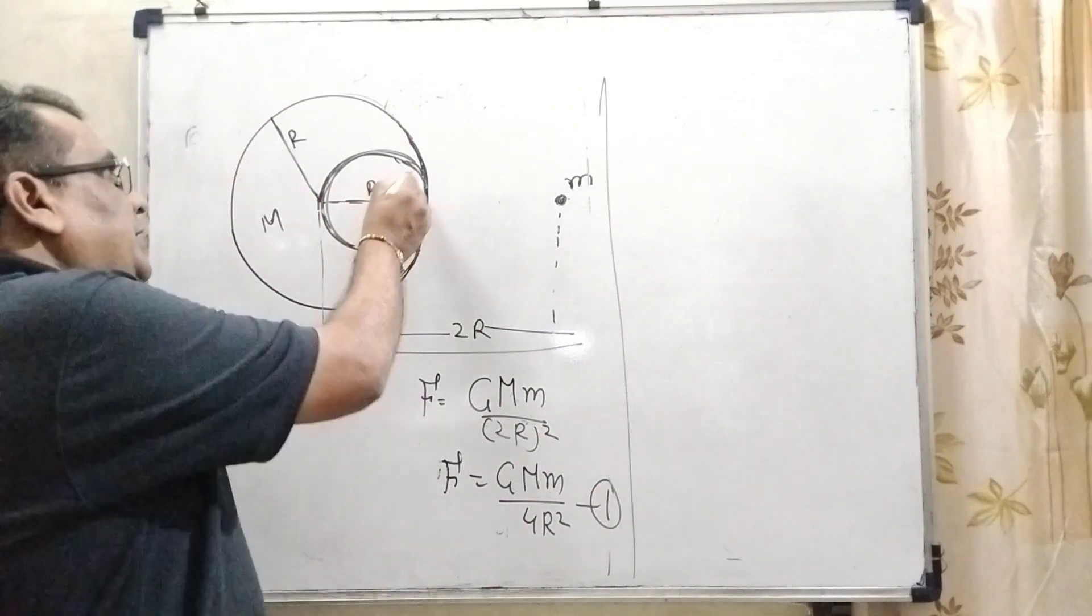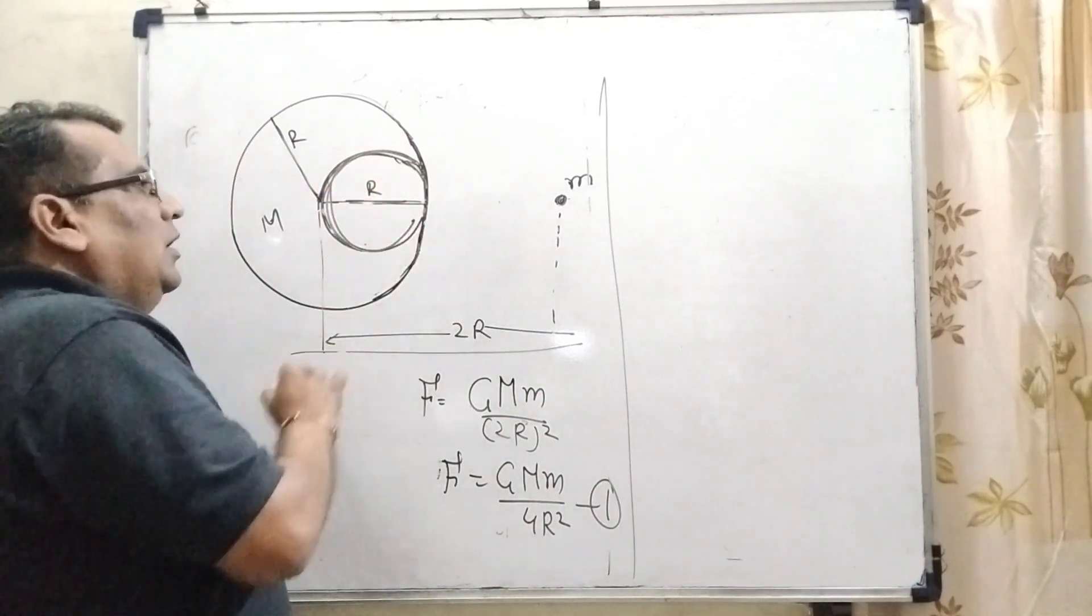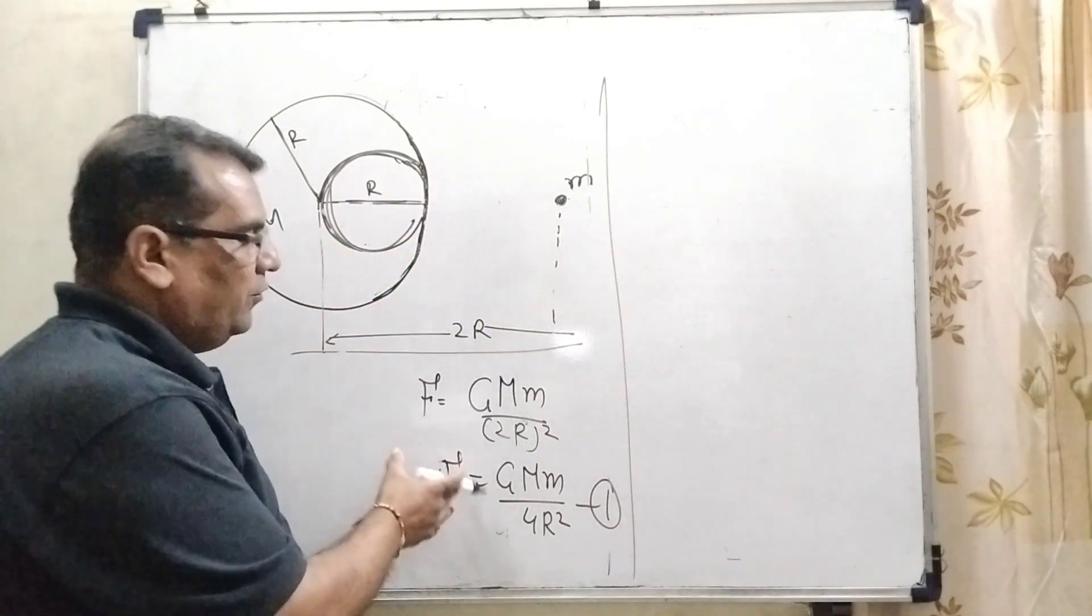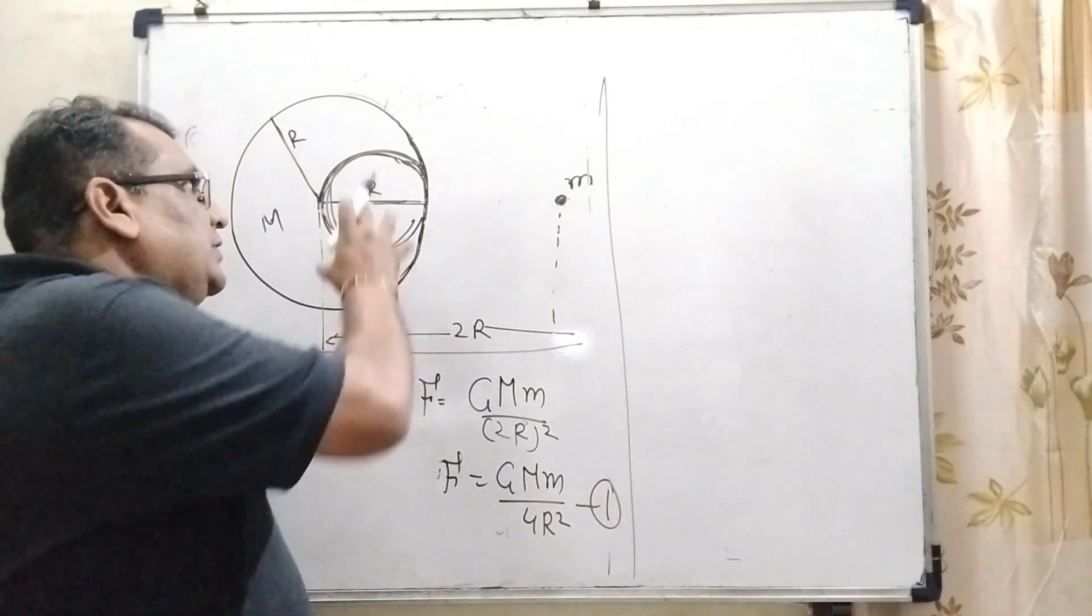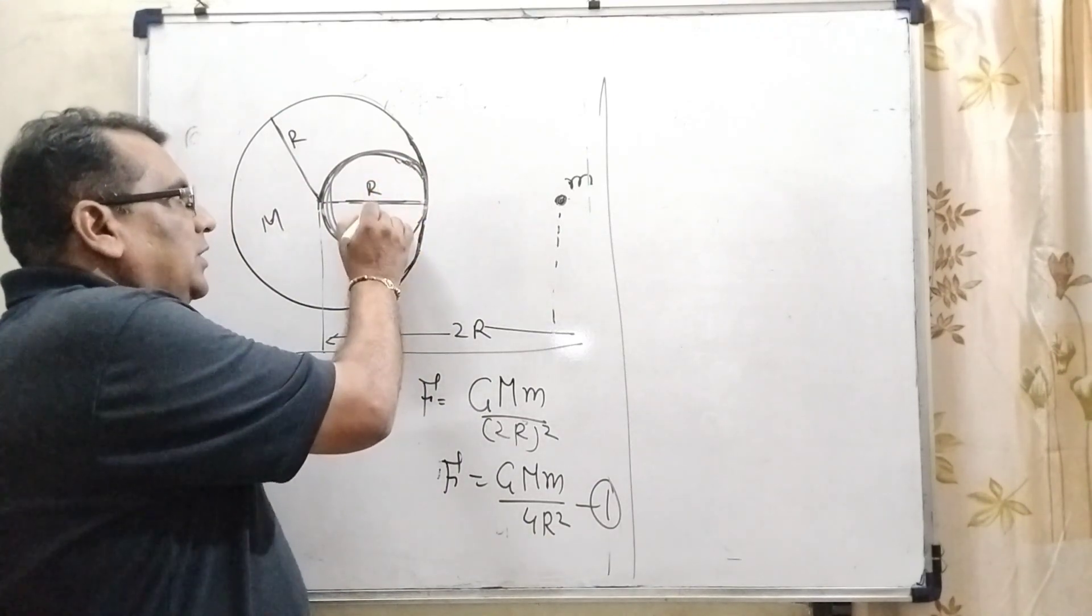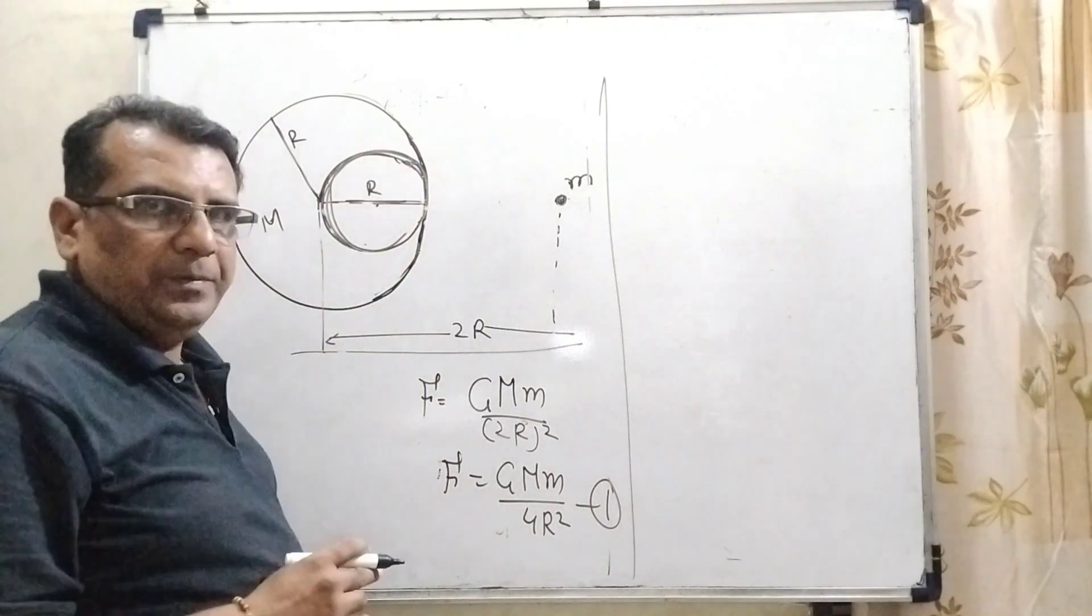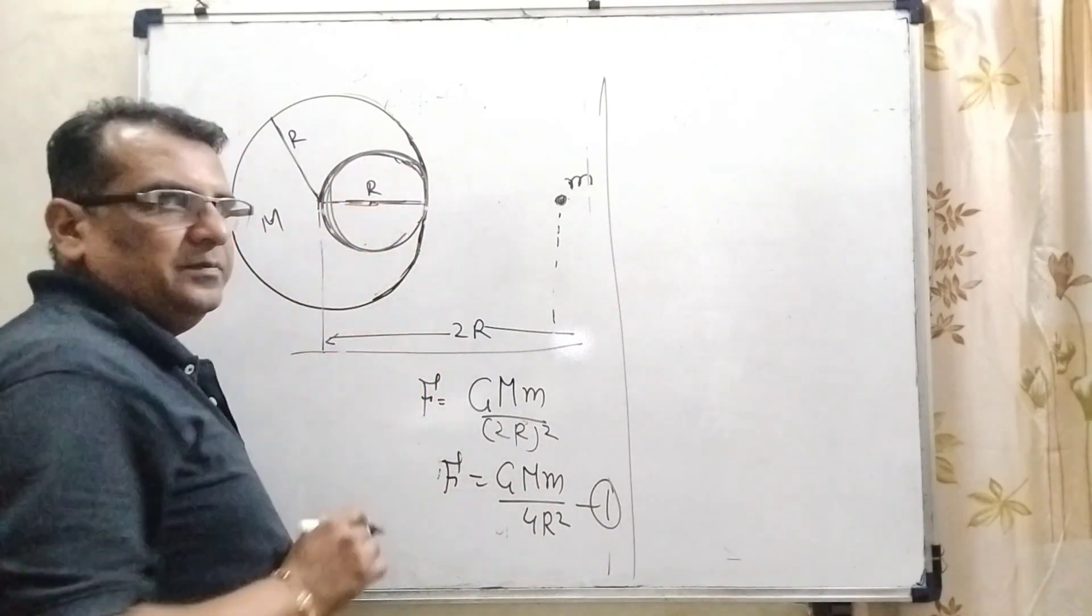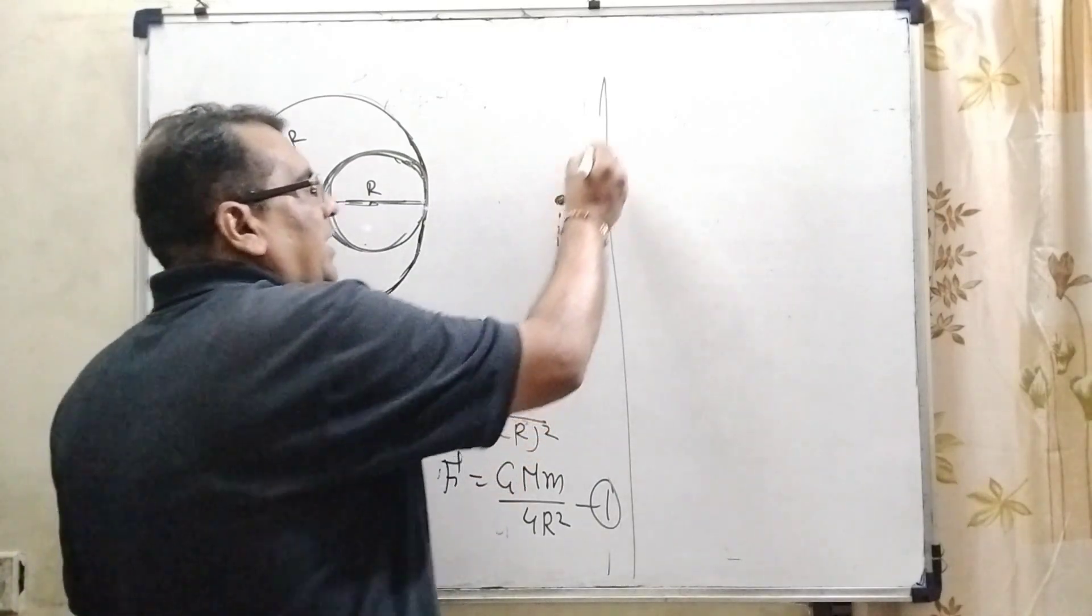Whenever it is cut down, what is the change of this force of attraction? Let us first find out the force of attraction between this sphere and this sphere. What is the mass? Let us first need the mass. How can we calculate the mass?